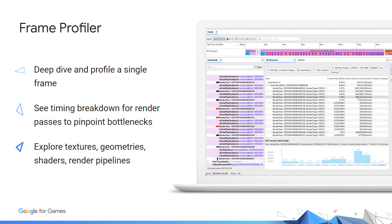We're introducing what we call the Frame Profiler. The envisioned workflow is that you'd first use the Systems Profiler to get a high-level understanding of where the hot zones are in the scenes you're interested in optimizing. Then you'd use the Frame Profiler to pinpoint exactly where that bottleneck is. The Frame Profiler allows you to deep dive into a single frame, providing timing information breakdowns at the render pass level, and lets you explore textures, geometries, shaders, and render pipelines to analyze what's going on in that frame. I'll now hand this off to Francesco to showcase the AGI Frame Profiler with a real-world example.